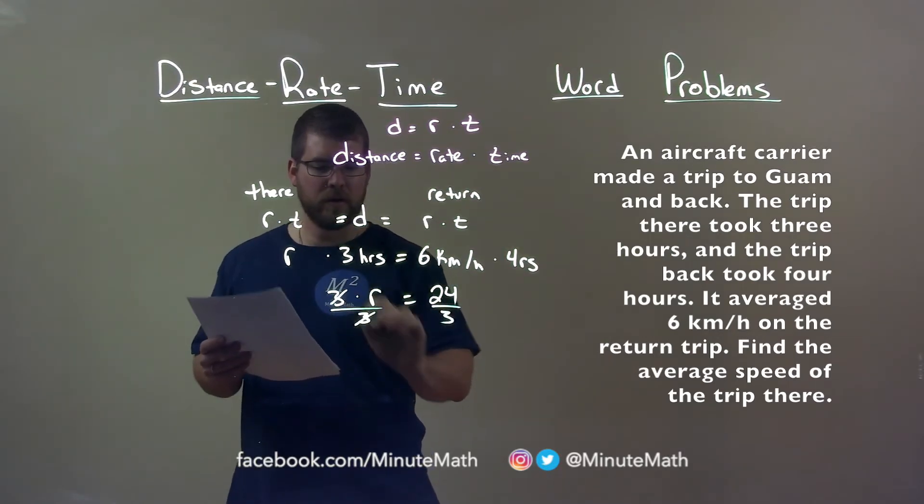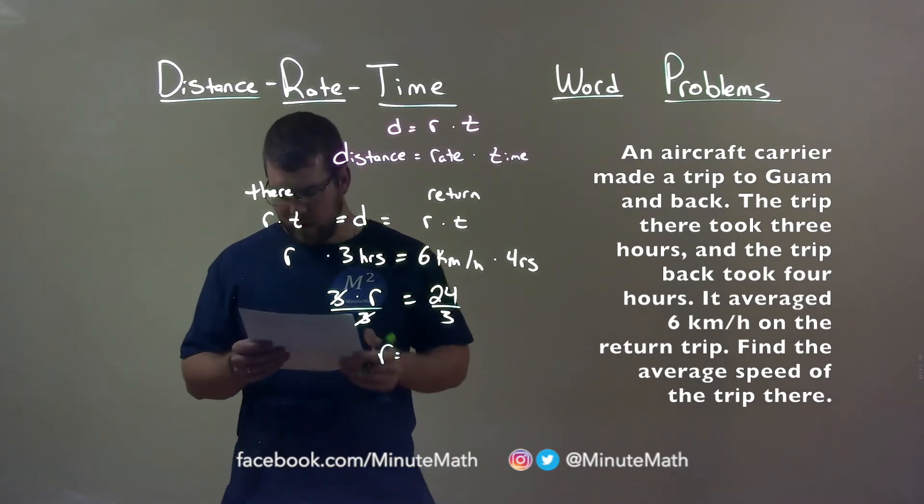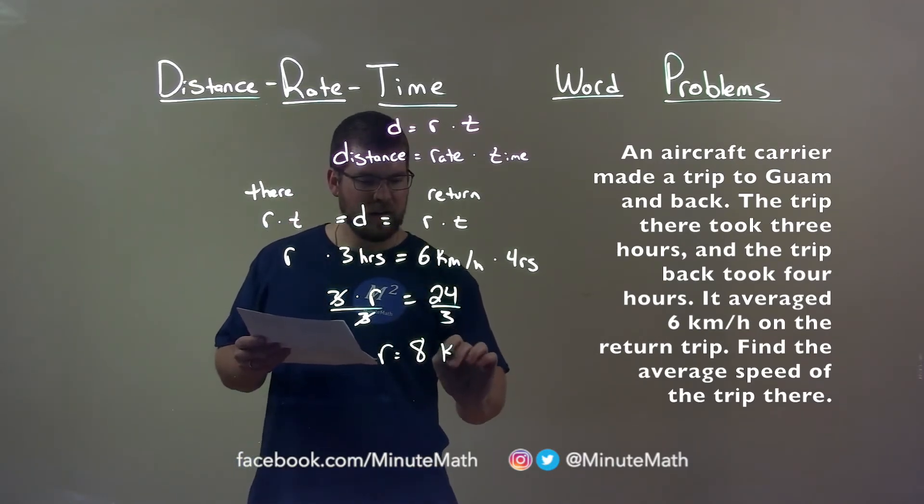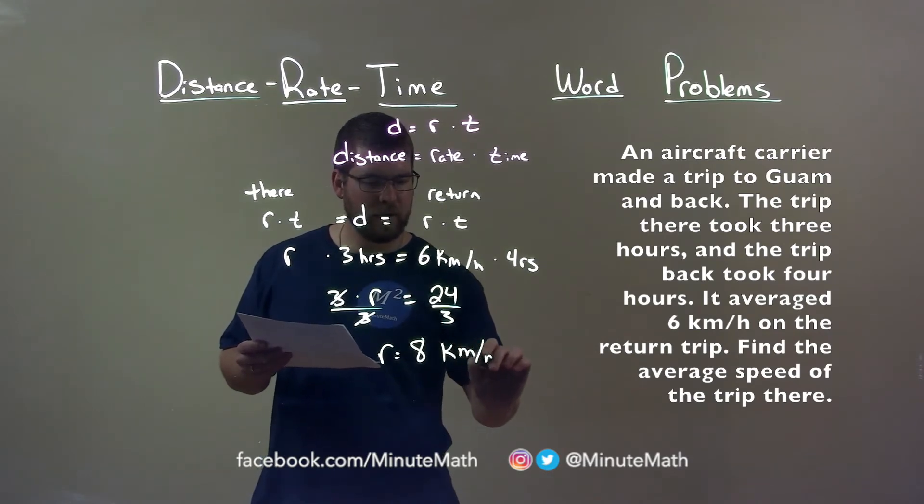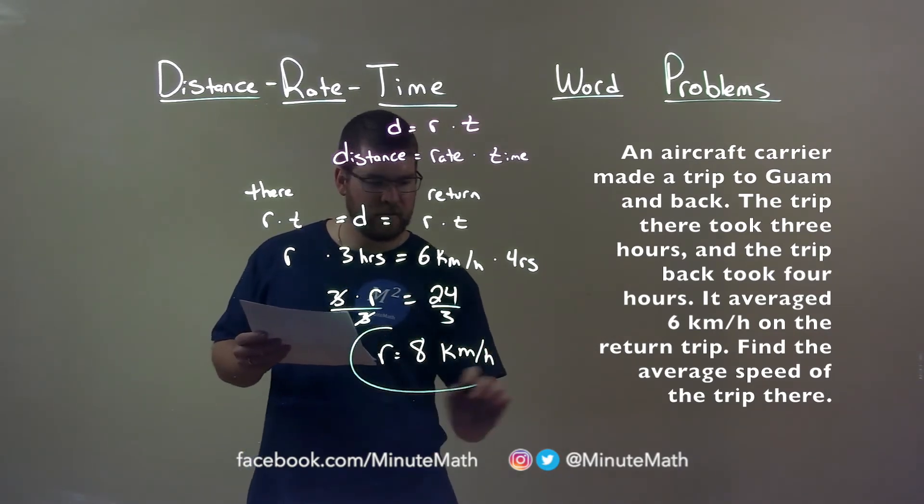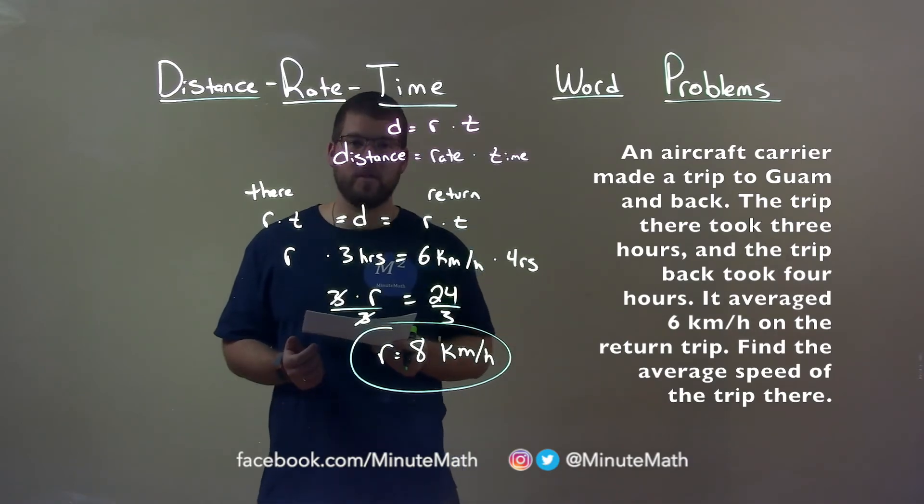Now we have r, our rate is 24 divided by three, which is eight, and that's eight kilometers per hour. That is our answer for the average speed of the trip there.